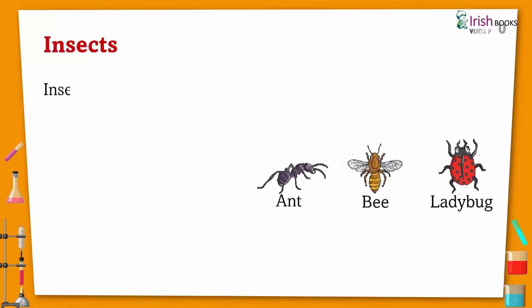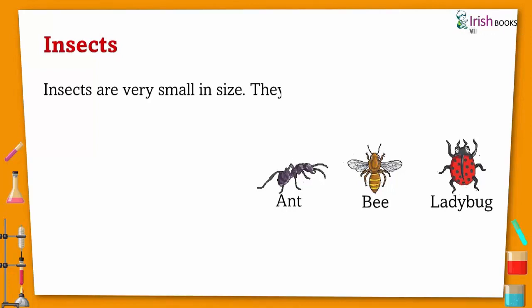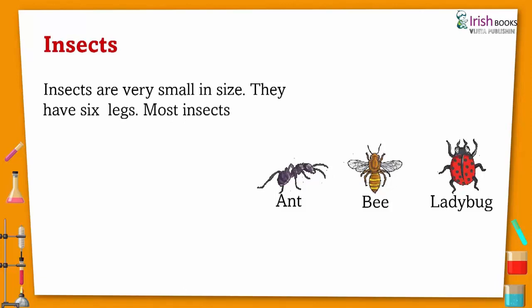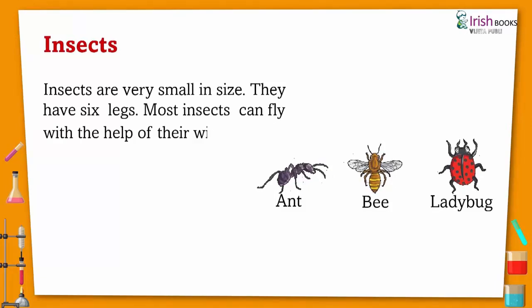Insects are very small in size. They have six legs. Most insects can fly with the help of their wings, like ant, bee, ladybug.